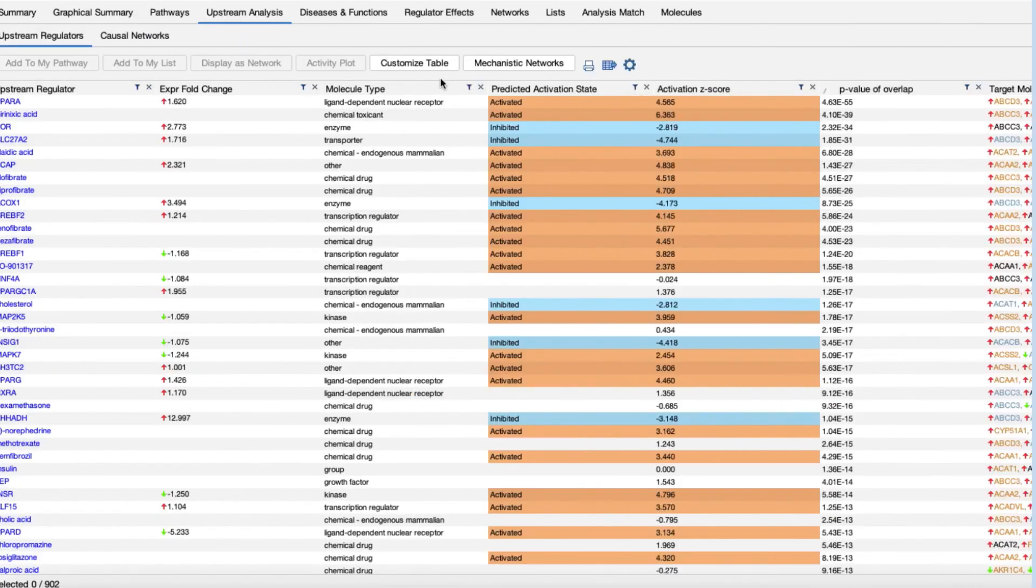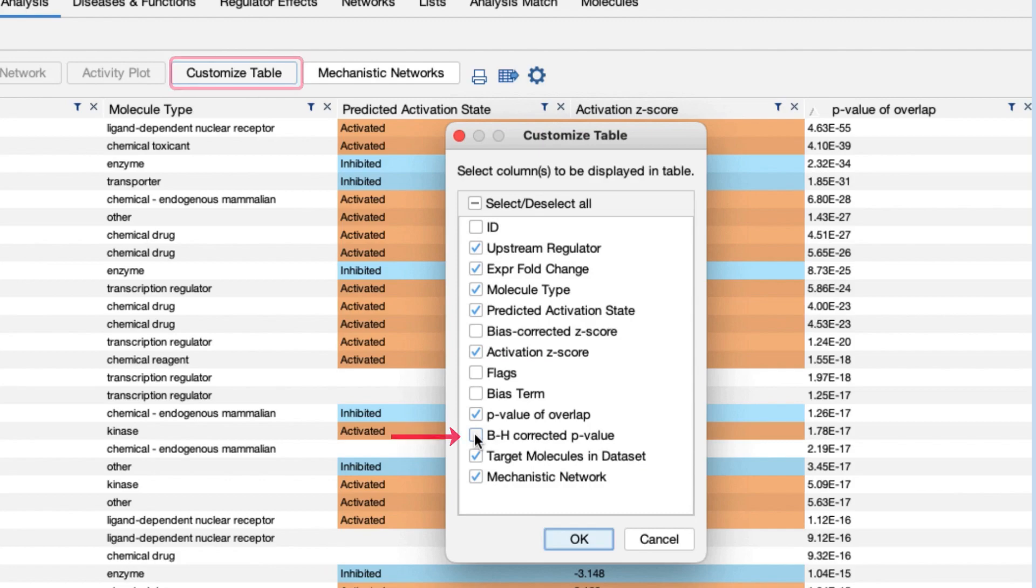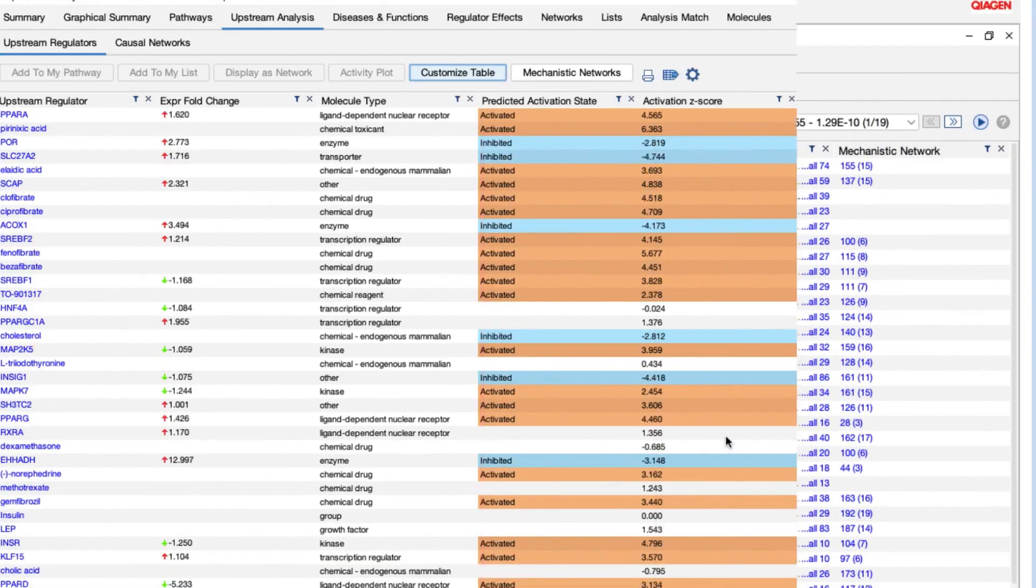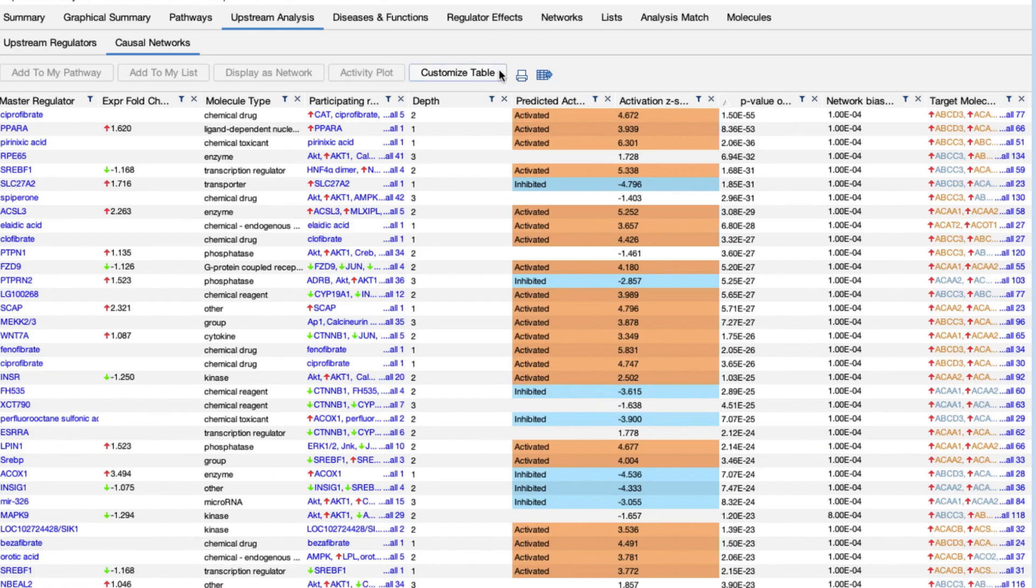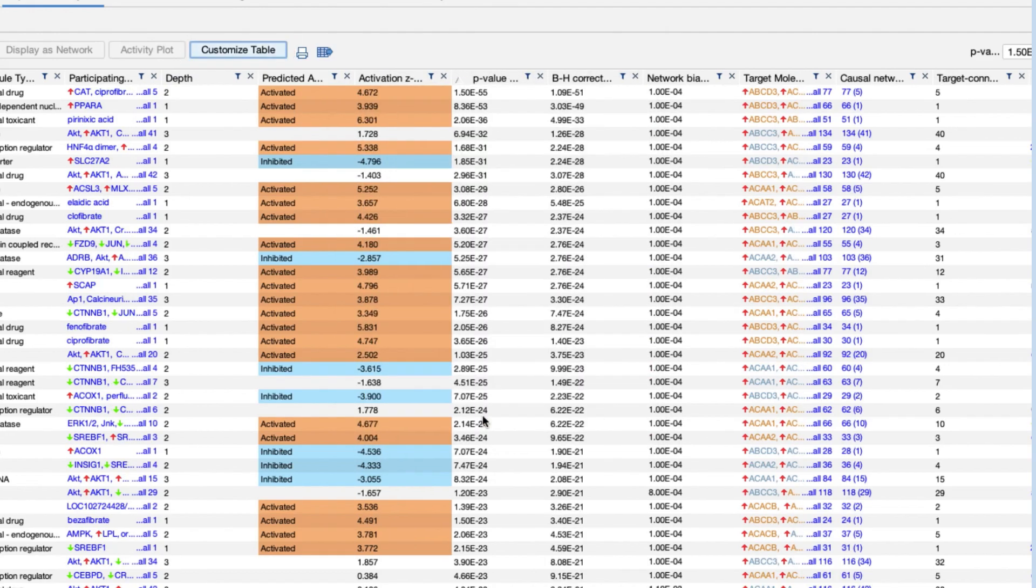For upstream analysis results, you can show the BH adjusted p-values by going to the Customize Table button and select this option. This will show a new column in the table with these values. Causal network analysis results also provide you with an option to show BH adjusted p-values via the Customize Table button.